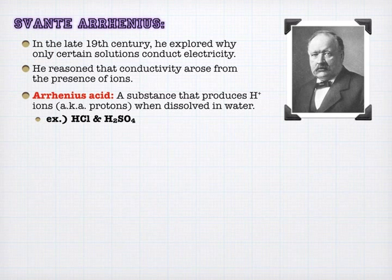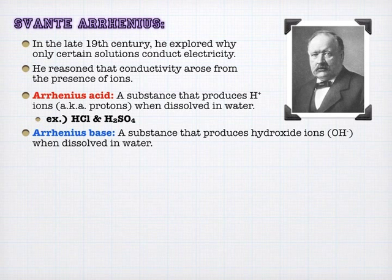So hydrochloric acid, sulfuric acid, when you put those in water they're going to dissociate and produce chloride ions, sulfate, polyatomic ions, and of course hydrogen ions, and that's what makes them an Arrhenius acid. An Arrhenius base is anything that produces hydroxide ions when you drop them in water, such as sodium hydroxide or potassium hydroxide.